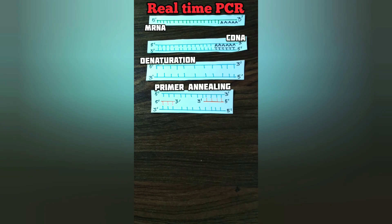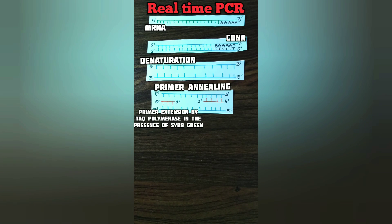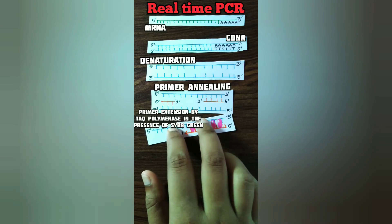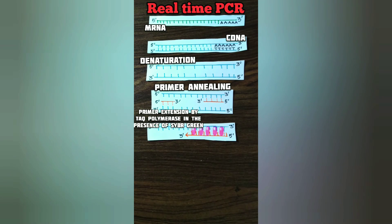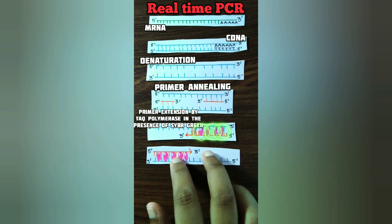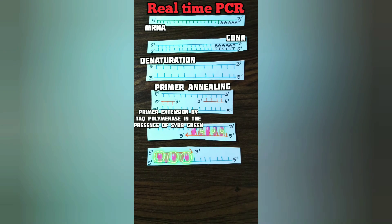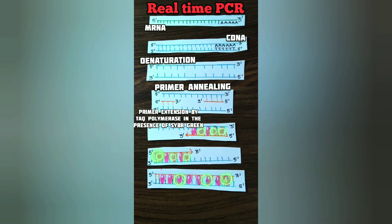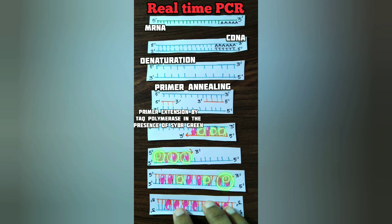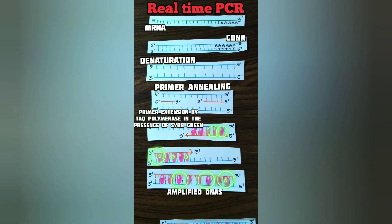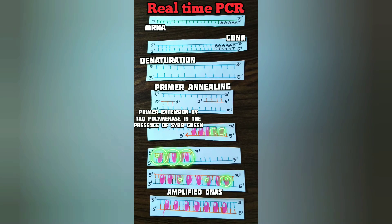SYBR green fluoresces very strongly when bound to DNA but emits very little fluorescence when not bound to DNA. By quantifying that fluorescence, a researcher can measure in real-time the amount of double-stranded DNA being synthesized. This measurement requires the use of a special thermal cycler that uses laser detection of the fluorescence produced after each PCR cycle. The rate of production of SYBR green-labeled amplified DNA is compared with controls that contain known amounts of a control messenger RNA.